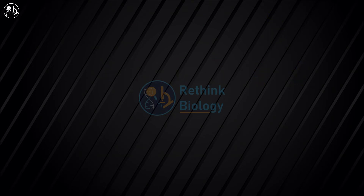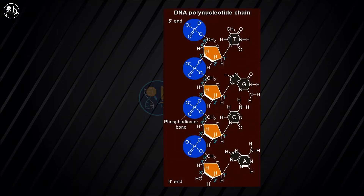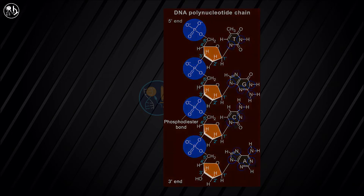Matthew Meselson and Frank Stahl developed a way to distinguish these molecules by using the heavy isotope of nitrogen, ¹⁵N. They replaced the normal form of nitrogen in DNA bases with ¹⁵N, which resulted in a DNA that is physically heavier than normal DNA.